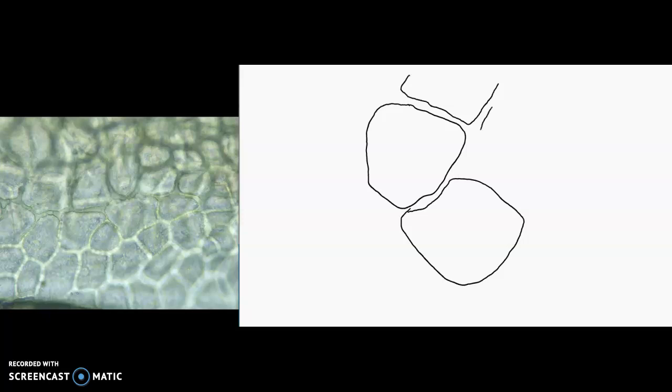That greenish tinted area is the space between cells called the middle lamella. The middle lamella is composed of basically some sticky things to stick your cells together with.